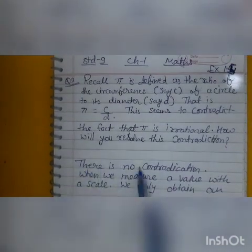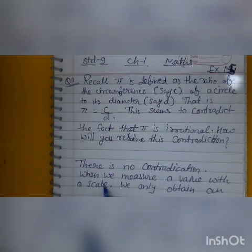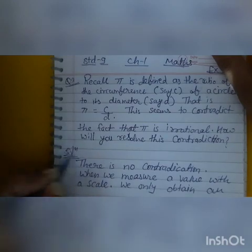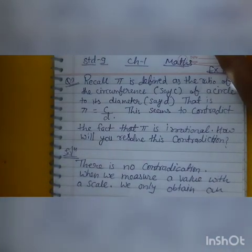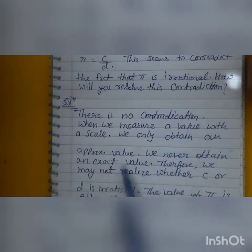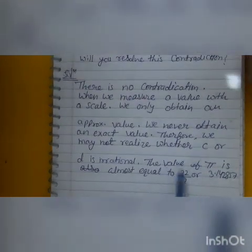There is no contradiction. When we measure a value with a scale, we only obtain an approximate value. We never obtain an exact value. Therefore, we may not realize whether C or D is rational or irrational.